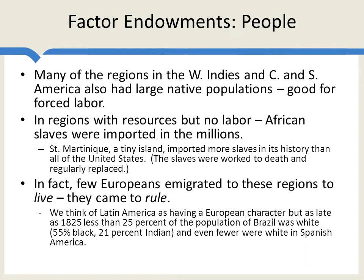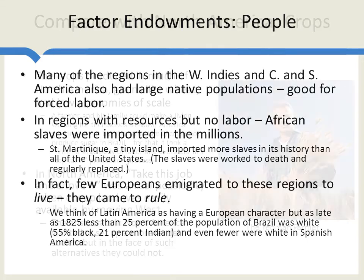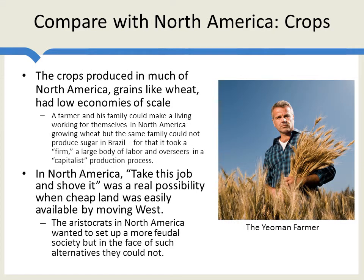So one factor endowment was the access to slave labor. Now let's compare the factor endowments of Central and South America — the three S's: slaves, silver, and sugar — with the factor endowments of North America. The crops produced in much of North America, grains like wheat, had low economies of scale. This meant that a farmer and his family could make a living working for themselves in North America growing wheat. The same family could not produce sugar in Brazil — for that it took a firm, a large body of labor and overseers, a capitalist production process. But you could have family farms in North America, and indeed there were millions of these family farmers.